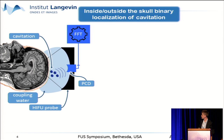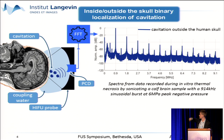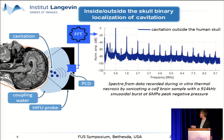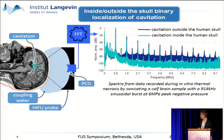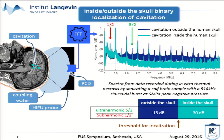If you record a signal from cavitation outside the skull, here is the typical spectra you obtain, with harmonics, the sub-harmonic, and some ultra-harmonics. And here is the spectra from cavitation inside the skull. As you can see, high harmonics are highly attenuated by the skull. So, for example, if you compute the ratio between the 5/2 ultra-harmonic over the 1/2 sub-harmonic, you obtain minus 15 decibels outside the skull and minus 30 decibels inside the skull. So you can easily find a threshold between these two values to binary localize cavitation activity.